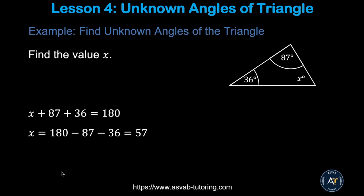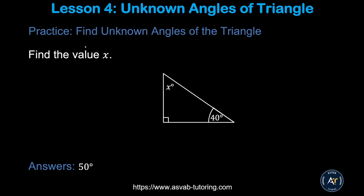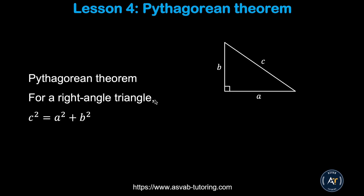Now we'll learn how to find the missing angle of a triangle. A triangle's angles sum to 180 degrees. If one angle is 36 degrees and another is 87 degrees, add those two and subtract from 180 — so x equals 57 degrees. In the next practice problem, there is no angle shown, which means it is a right angle of 90 degrees. Try by yourself and make sure you get 50 degrees.